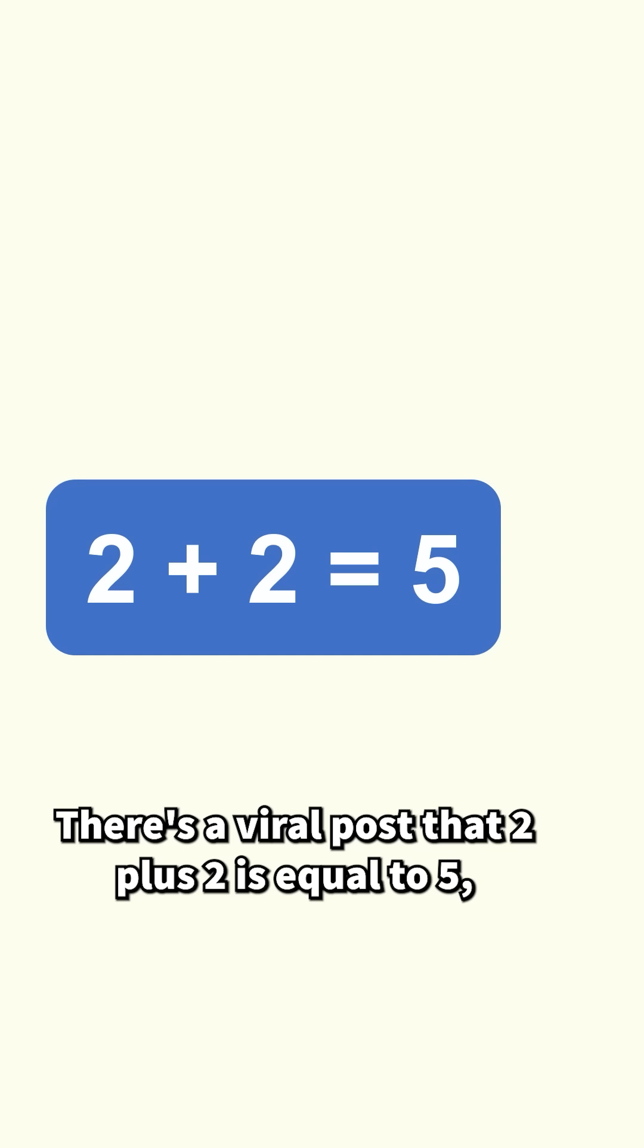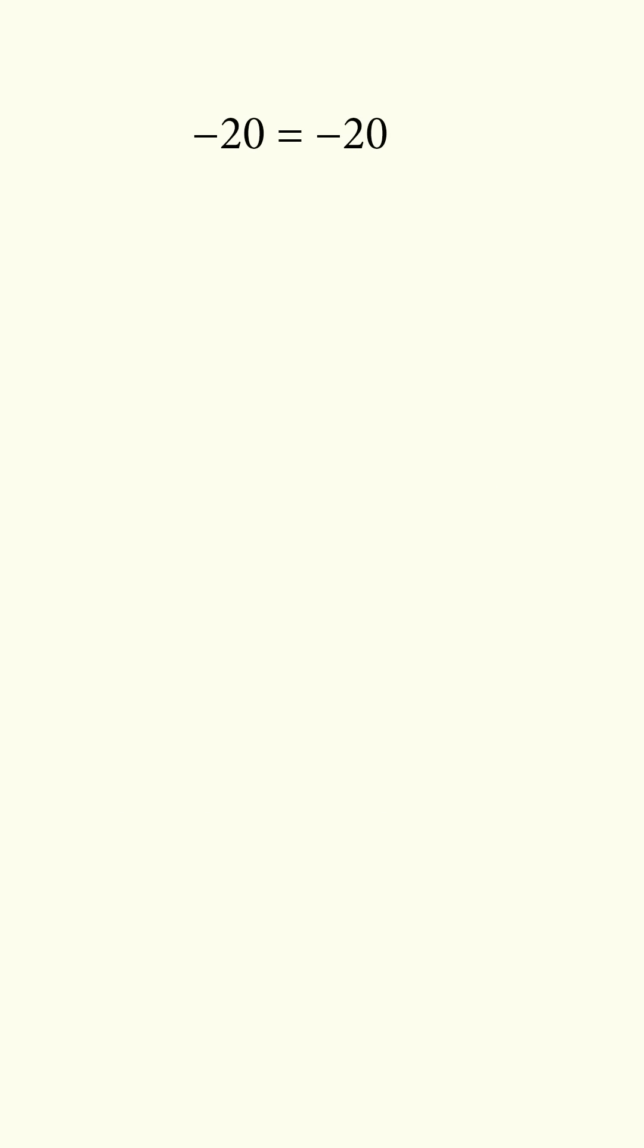There's a viral post that 2 plus 2 is equal to 5, and it goes like this. Negative 20 is equal to negative 20. That means 16 minus 36 is equal to 25 minus 45.